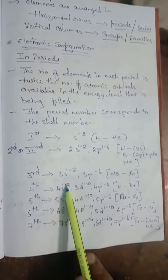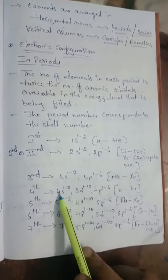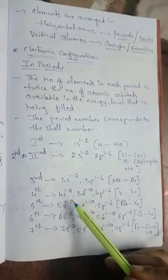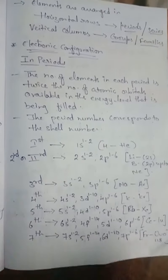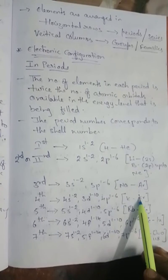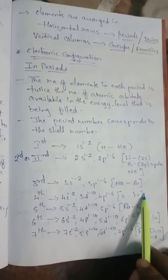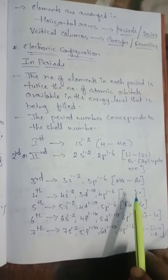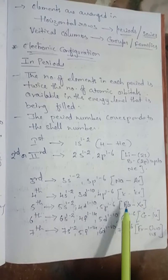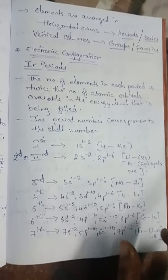The fourth period has the electronic configuration 4s1-2, 3d1-10, 4p1-6. The fourth period starts from potassium, atomic number 19, with filling up to 4s. Filling of 4s is completed with calcium. Before 4p orbital filling, filling of 3d orbital becomes favorable. Ten elements from scandium to zinc are filled with the differentiating electron in the 3d subshell. The period ends with krypton, with the filling up of 4p orbital, giving 18 elements in the fourth period.